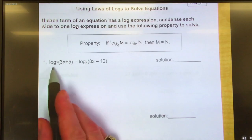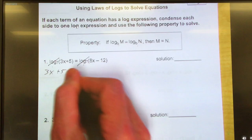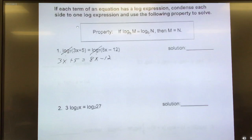To kind of make it easier to see, this is a log base 7 and a log base 7. Everything has a log base 7, so I can just scratch them off. And that leaves me 3x plus 5 equals 8x minus 12.